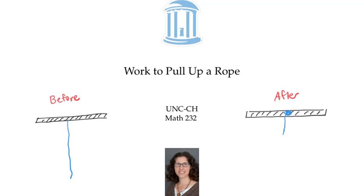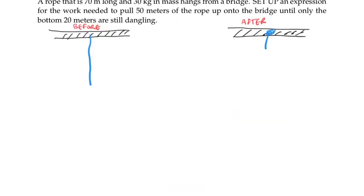In this video, we'll calculate the work required to pull part of a rope up onto a bridge. A rope that's 70 meters long and 30 kilograms in mass is hanging from a bridge. We want to set up an expression for the work needed to pull 50 meters of the rope up onto the bridge so that just 20 meters are still dangling.